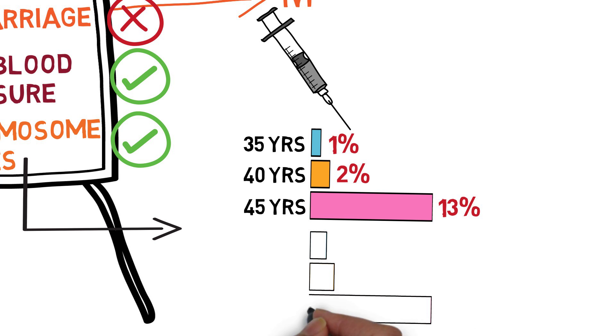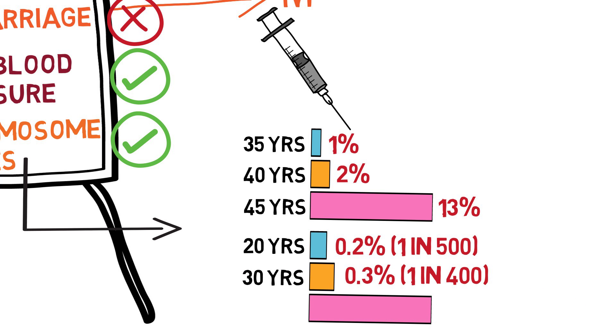Specifically for Down syndrome, it's about 1 in 500 when you're 20, 1 in 400 when you're 30, and 1 in 65 when you're 40.